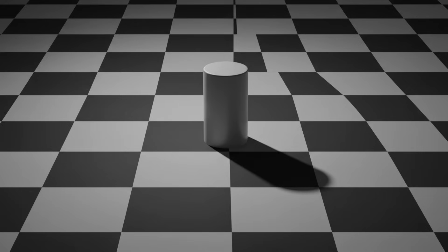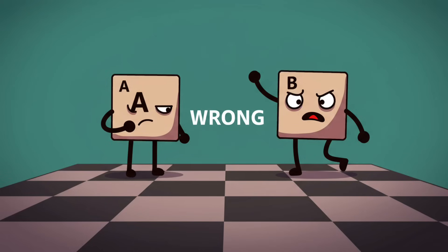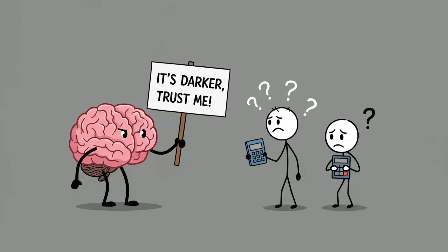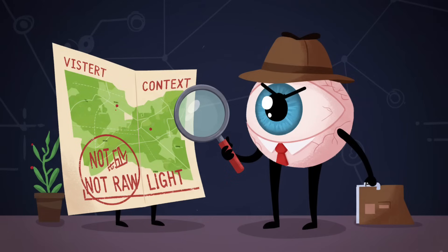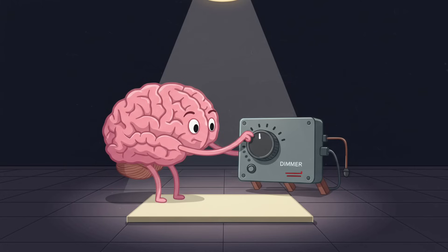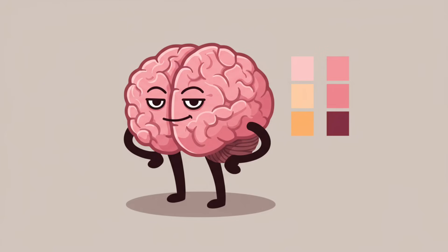Number one: the checker shadow illusion, shades of gaslighting. Take a chessboard pattern, put a cylinder on it, and shade a square so it looks darker than the one next to it. Simple, right? Wrong. In the checker shadow illusion, two squares that are exactly the same shade of gray look wildly different because your brain automatically compensates for lighting and shadow. Basically your brain is gaslighting you with math. Here's how it works: your visual system isn't concerned with raw light levels, it's obsessed with interpreting context. A square in shadow is supposed to look darker, so your brain cranks up the brightness to correct it. Meanwhile, a square in the light is supposed to look brighter, so your brain dims it. The result? Two identical colors look completely different, and your brain smugly insists it's being helpful.